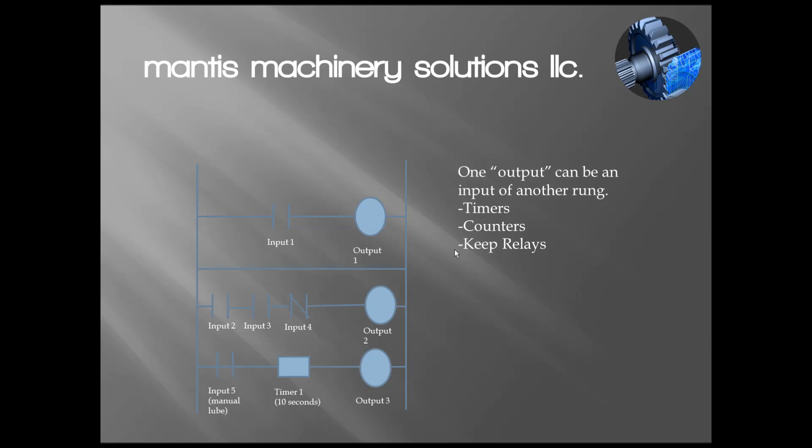There's something else called a counter. A counter does exactly that - it counts. I could set it for 10 or 20. Maybe there's an automatic lubrication cycle on this machine, and it keeps track of every time we move the X axis. Every hundred times, I want you to turn on the lubrication pump. So we would use a counter for that.